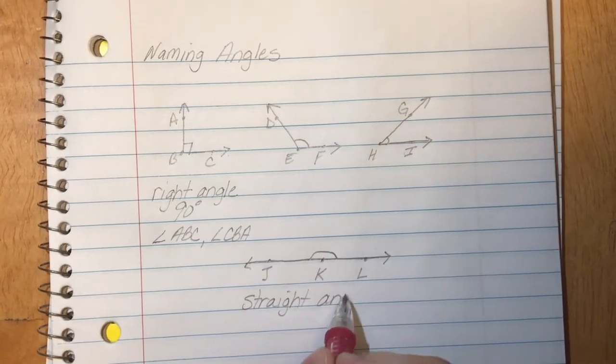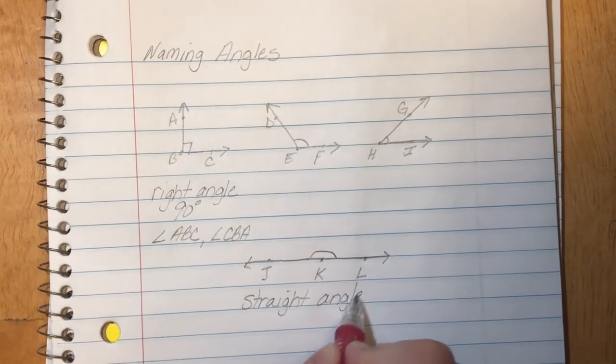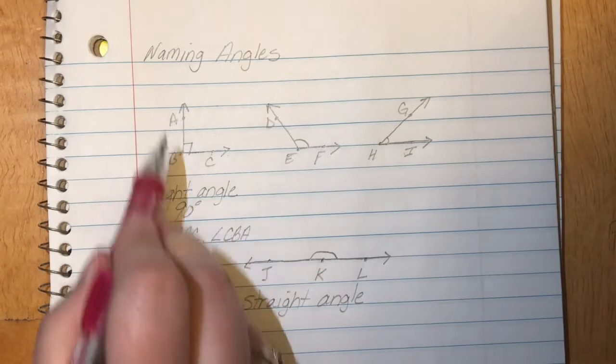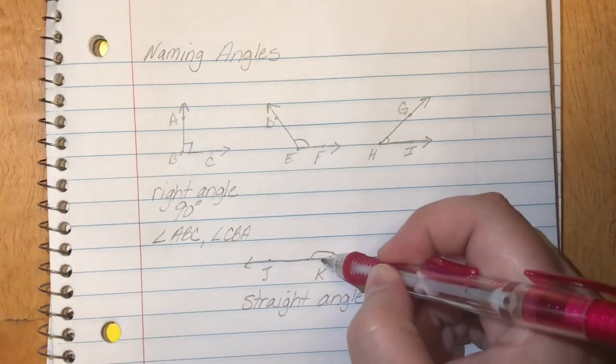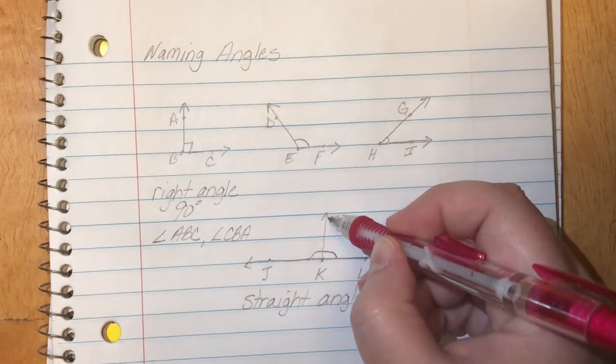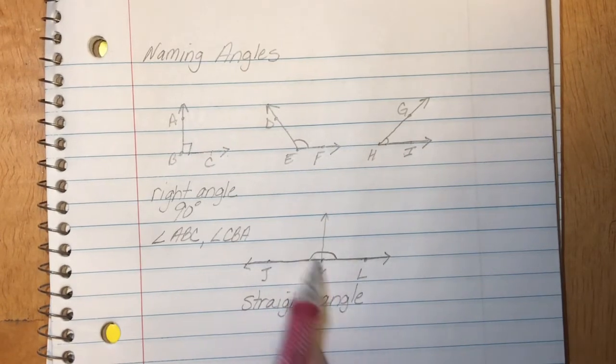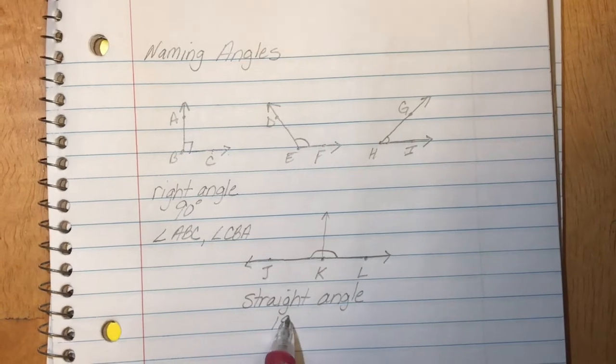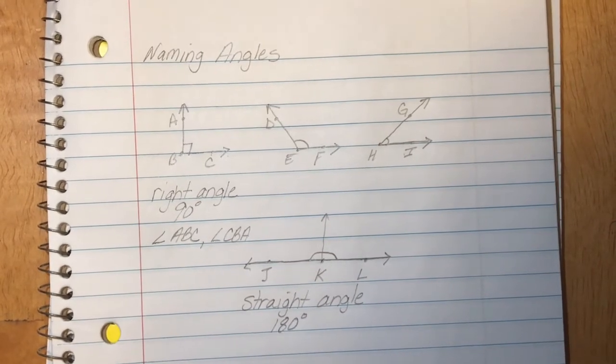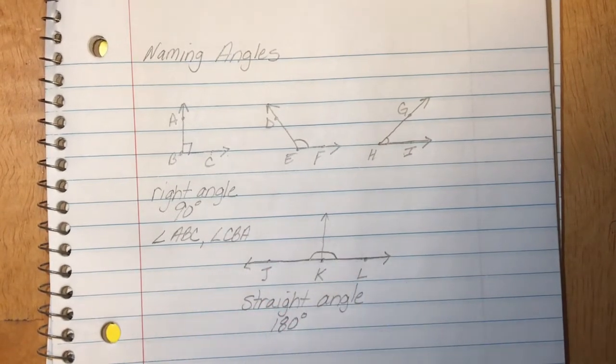Now straight angles are basically like taking two right angles and putting them together because if I put a ray here you'll notice that there's a right angle on this side and there's a right angle on this side. So straight angles equal 180 degrees or 90 plus 90.